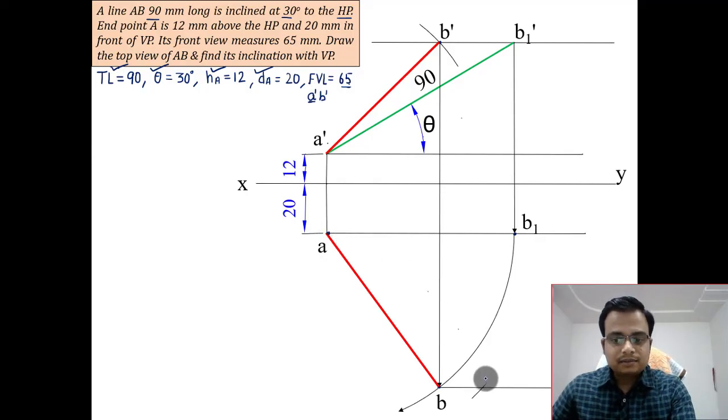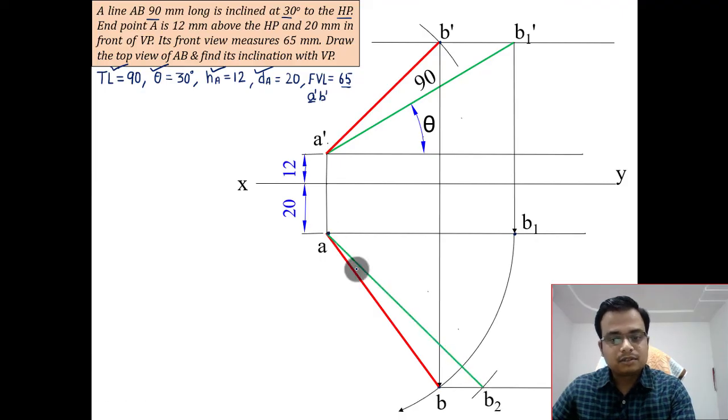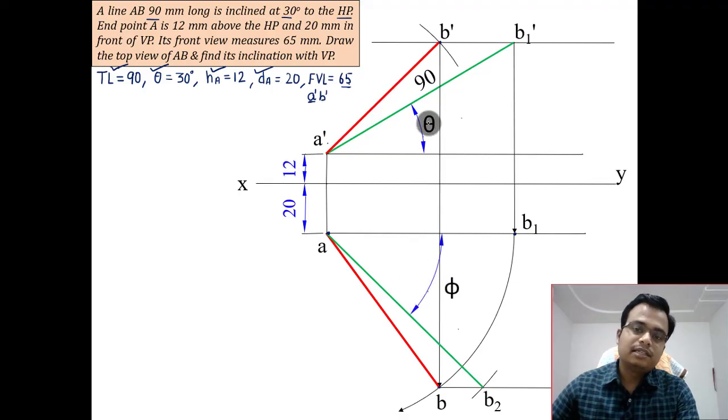But the angle over here, guys, is phi. Similarly, the angle over here is theta, and this angle right here is beta.